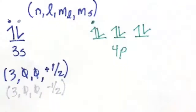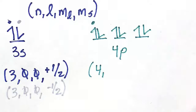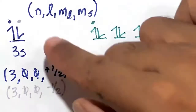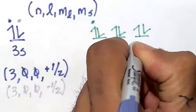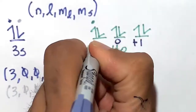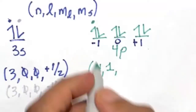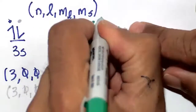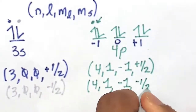For the first electron in the 4p orbital, the principal quantum number n is 4. For a p orbital, l is 1. For the first slot, m sub l is minus 1, and the electron is spin up, so m sub s is plus 1 half. The second electron in that same slot is exactly the same, except it's spin down, so m sub s is minus 1 half.